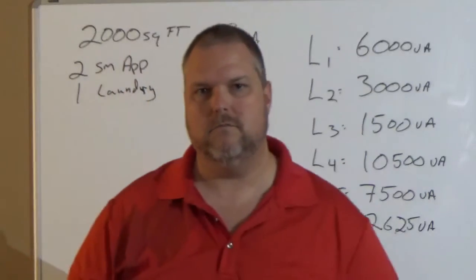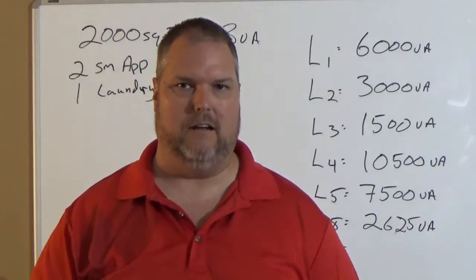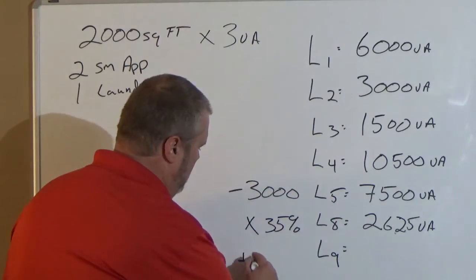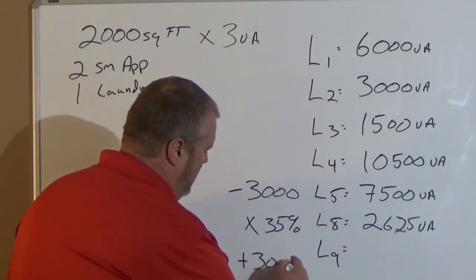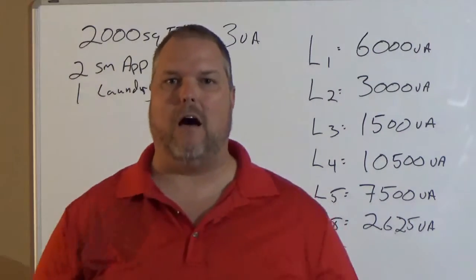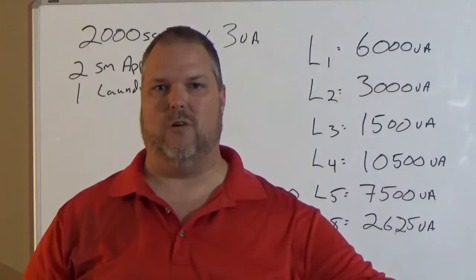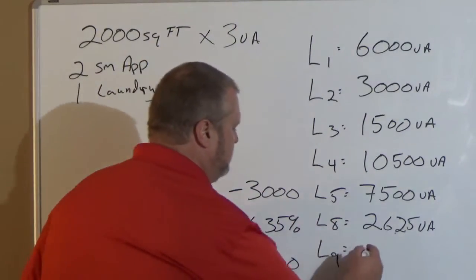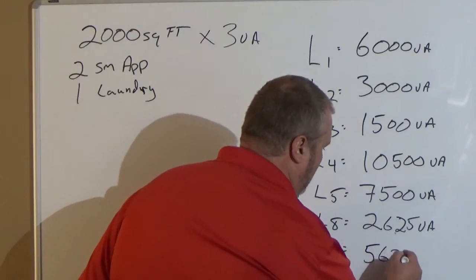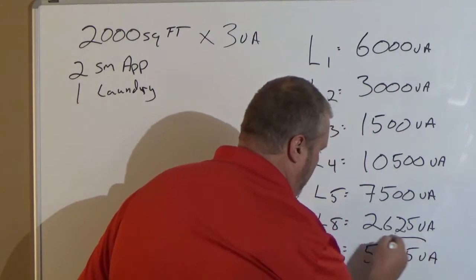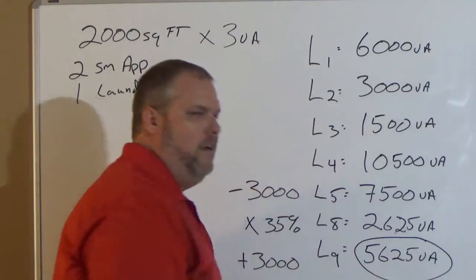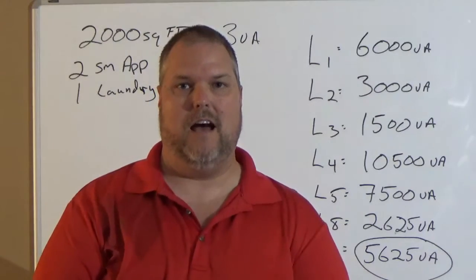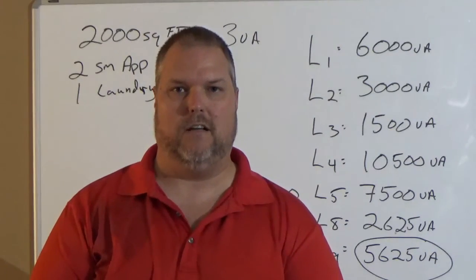Are we done yet? No. Because now we have to fill in line 9. Line 9, what we're going to do is add 3,000 back into it. So now I'm going to take that 2,625, I'm going to add 3,000 back into it and it's going to give me 5,625 and that is in line 9. Line 9 is my general lighting load.